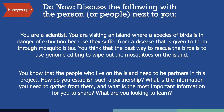As an introduction to the second case study, please consider the following scenario. Imagine you are a scientist visiting an island where a species of birds is in danger of extinction because they suffer from a disease that is given to them through mosquito bites. You think that the best way to rescue the bird is to use genome editing to wipe out the mosquitoes on the island. You know that the people who live on the island need to be partners in this project. How do you establish this partnership? What is the information you need to gather from them, and what is the most important information for you to share? What are you looking to learn? You may want to pause here to think about your own answers to these questions.